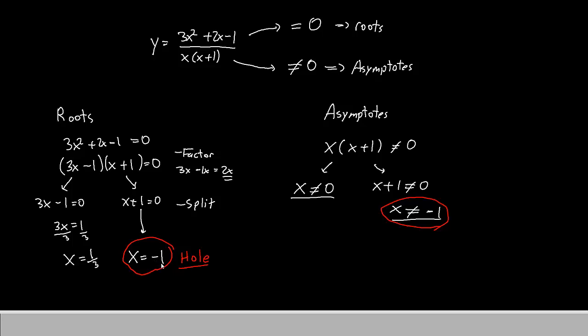However, the remaining solution, x equals 1 third, is not mentioned in the asymptotes, which means it is the correct solution. So our solution will be x equals 1 third. And that is how you solve a rational equation and how you eliminate the holes to avoid giving wrong answers. Thanks for watching, everybody. We'll see you again next episode.